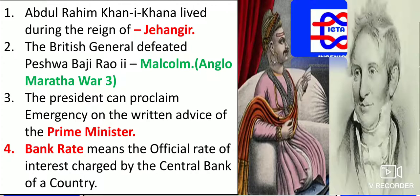The British general who defeated Peshwa Baji Rao II was Malcolm, in the Anglo-Maratha war. Remember there were three Anglo-Maratha wars; it was in the third war that the British general defeated Peshwa Baji Rao II.